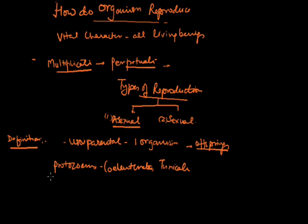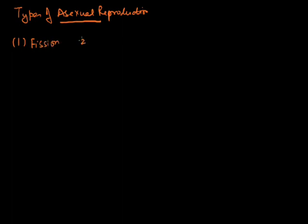Specifically, it is prevalent among plants. Let us see the types of asexual reproduction. There are broadly four categories: one is fission, number two is budding, number three is fragmentation, and number four is sporulation or spore formation.